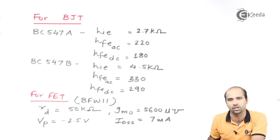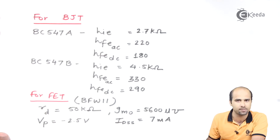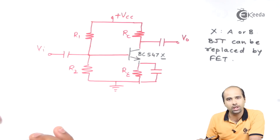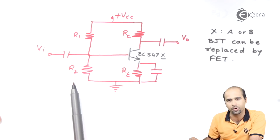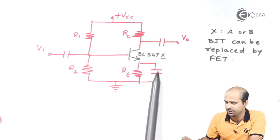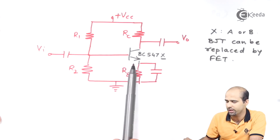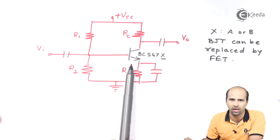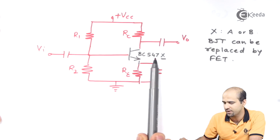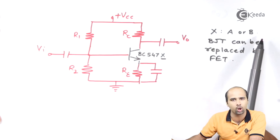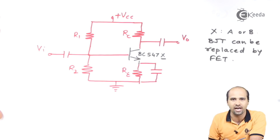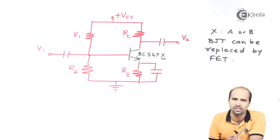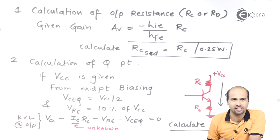With all these specifications, we will move further for the design steps for the amplifier. Initially you have to draw the simple circuit diagram which comprises all the passive components — that is resistances and coupling capacitors — along with the active component, that is BJT or FET, using BC547A or BC547B depending on the gain specification. We can also replace the BJT by FET if the required gain is less than 10 or less than 20.